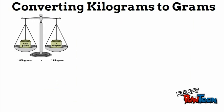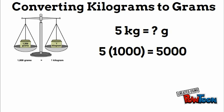Let's talk about converting kilograms to grams. We know one thousand grams equals one kilogram, so five kilograms—you can multiply by a thousand—gives us five thousand. So five kilograms equals five thousand grams.